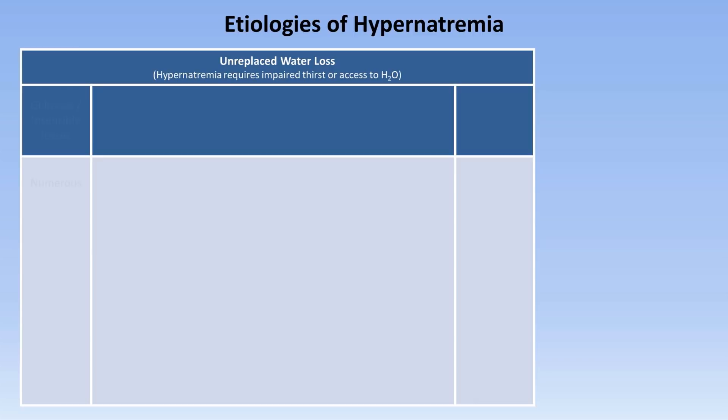There are three general categories of disorders that lead to unusually pronounced water loss. The first is excessive GI or insensible losses, of which there are numerous causes such as diarrhea or profuse sweating in extreme heat.